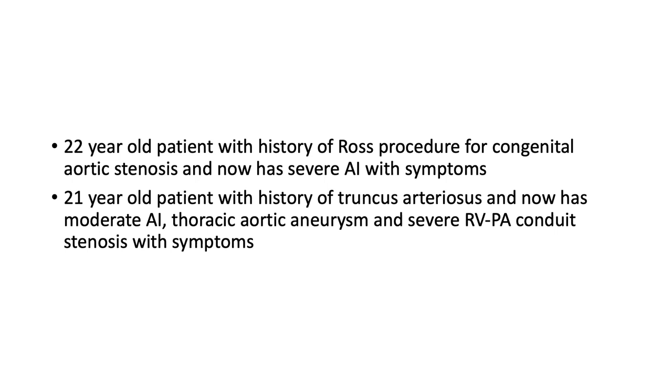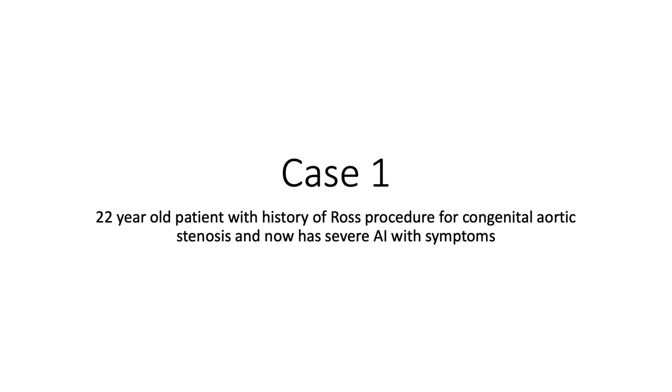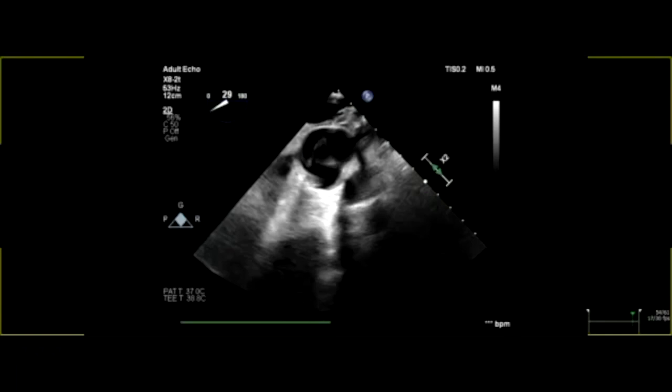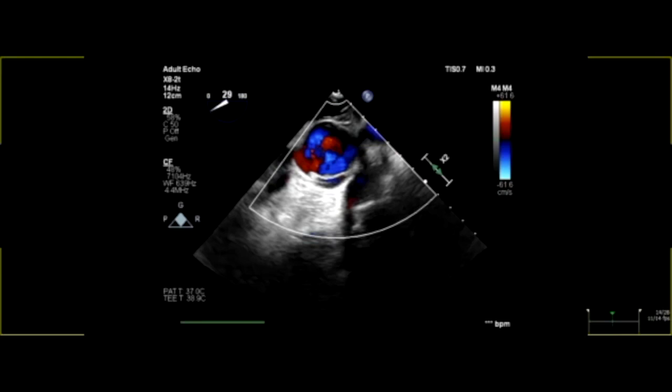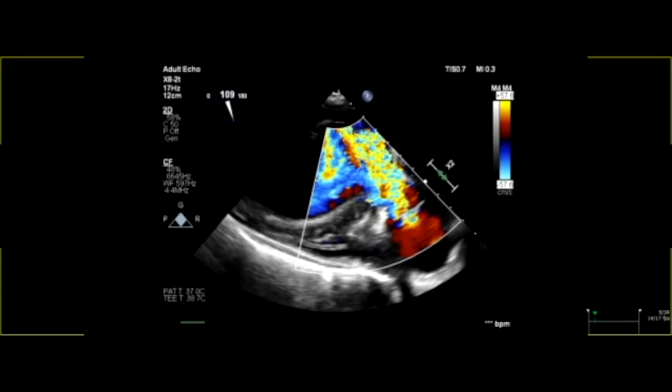The first patient was 22 years old with a history of a Ross procedure for congenital aortic stenosis and now had severe AI with symptoms. Her BSA was 1.55 meters squared. Preoperative echocardiogram shows a central coaptation defect from annular dilatation. There is severe AI through this defect, seen in both the long axis and short axis views. Flow reversal is seen in the descending aorta.